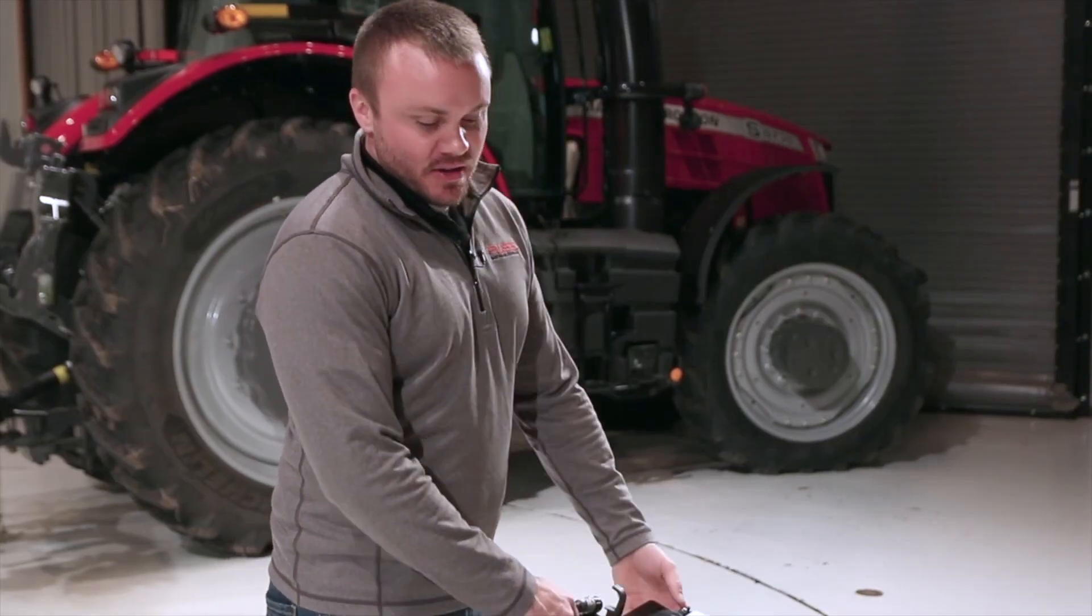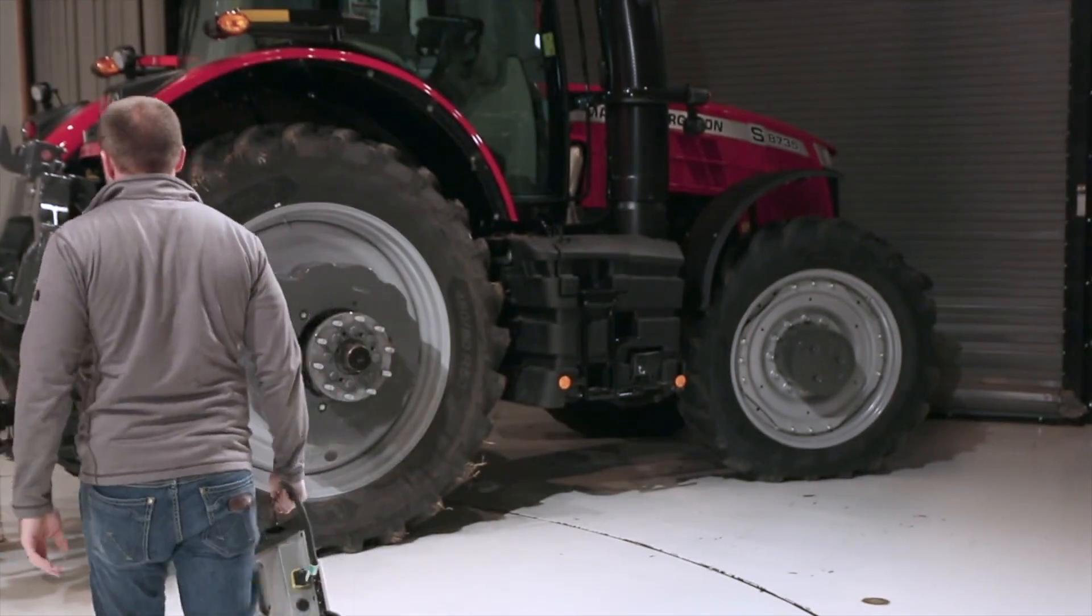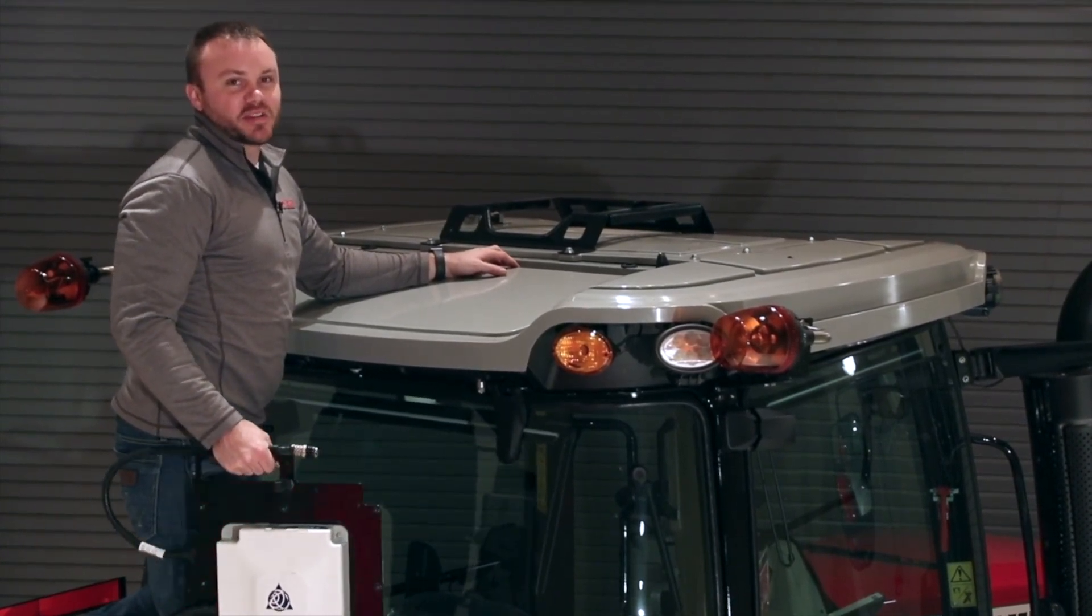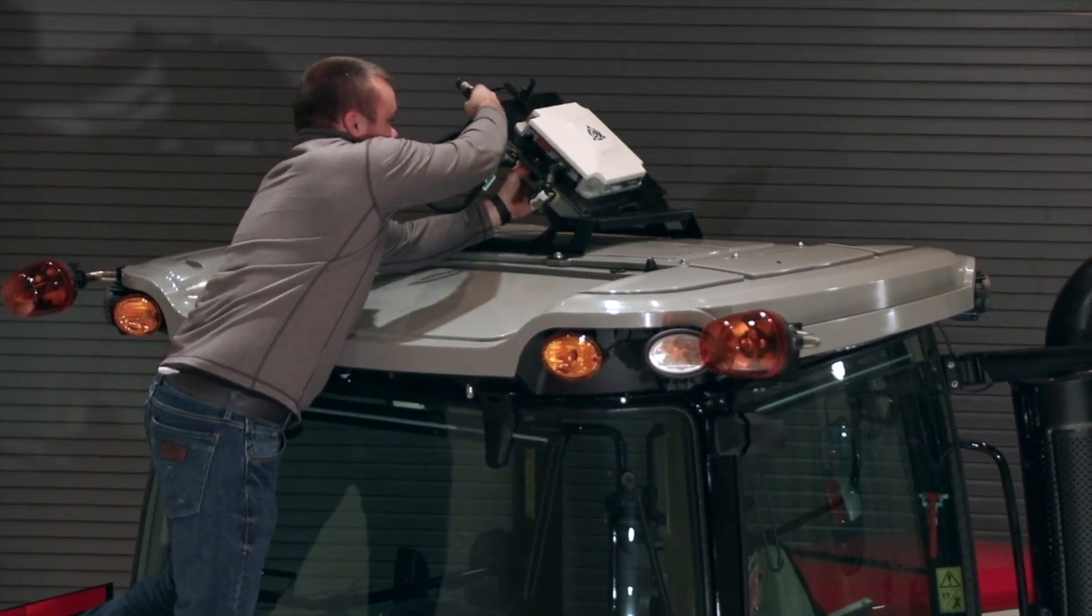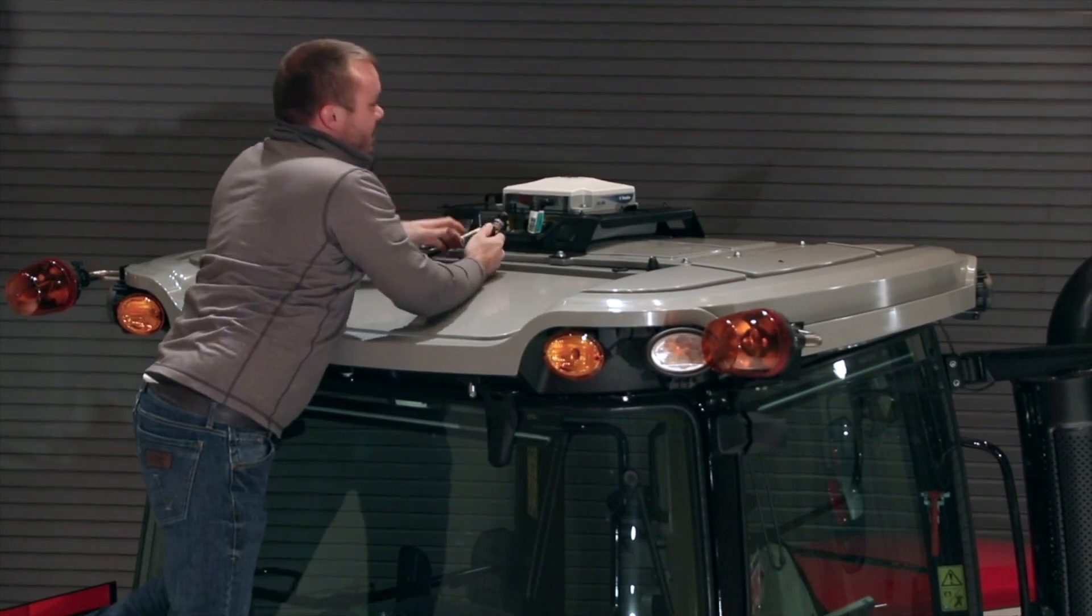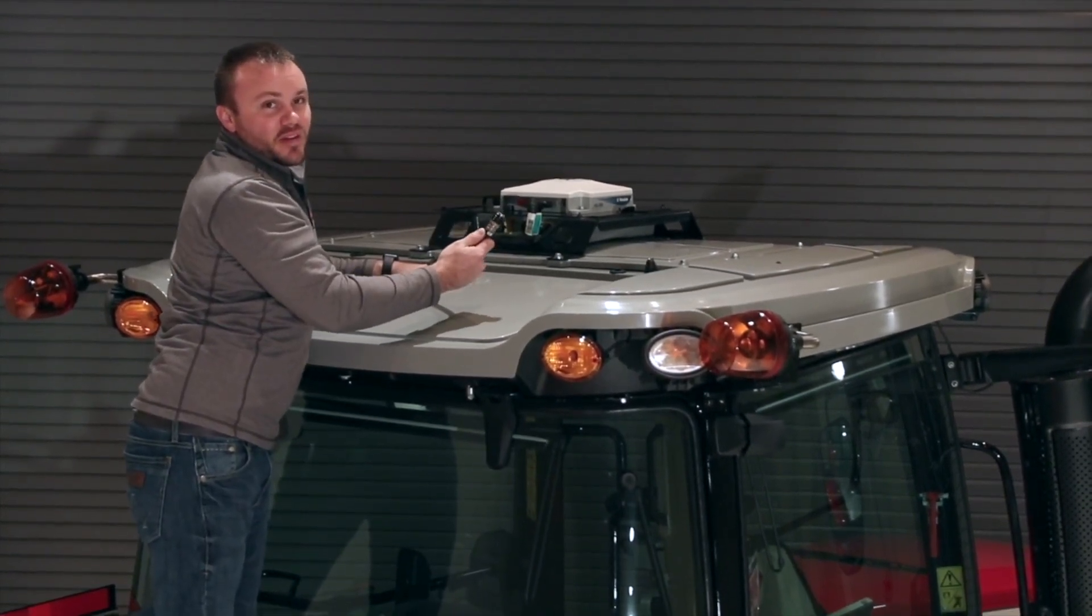Let's finish by installing this complete unit onto the tractor. Now that we have this put together, we'll install this on the roof bracket that comes from the factory on this Massey tractor. The final step is to take this harness and plug it into the bulkhead on the roof of this tractor.